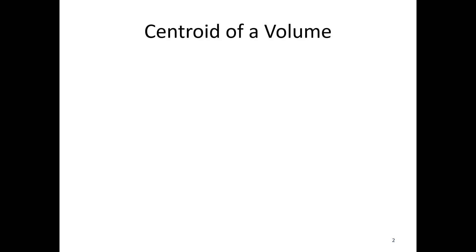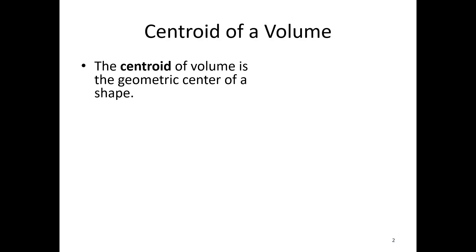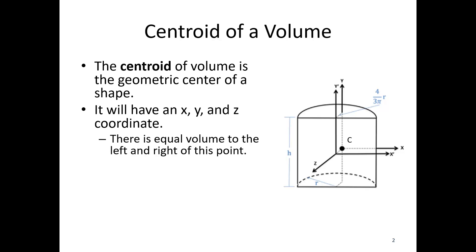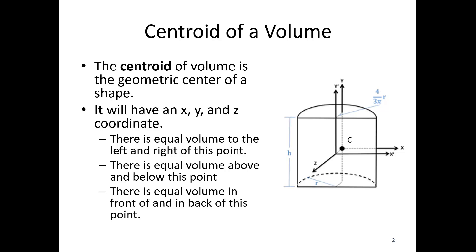The centroid of a volume is going to be the geometric center of that shape. So over here we've got kind of a half cylinder. I've labeled point C, and point C is the centroid. The average means that there's going to be equal amount of material to the left and right of this position. There's going to be equal amount of volume above and below this point, and equal amount of volume in front of and behind this point.